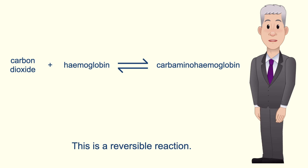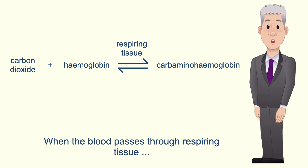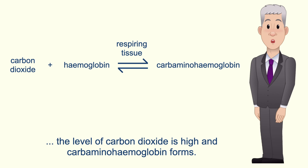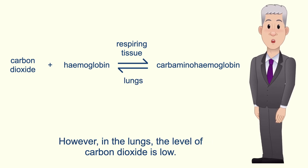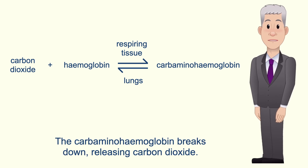When carbon dioxide reacts with hemoglobin it forms the compound carbaminohemoglobin. This is a reversible reaction. When the blood passes through respiring tissue the level of carbon dioxide is high and carbaminohemoglobin forms. However, in the lungs the level of carbon dioxide is low and the carbaminohemoglobin breaks down releasing carbon dioxide.